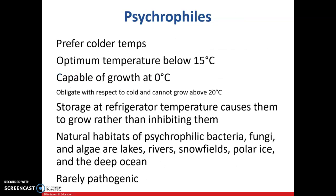Psychrophiles prefer cold temperatures — their optimum temperature is below 15 degrees Celsius, and they can actually grow at zero degrees Celsius. These are more of a problem in the refrigerator. Natural habitats of psychrophilic bacteria, fungi, and algae are lakes, rivers, snowfields, polar ice, and the deep ocean. These organisms are rarely pathogenic.